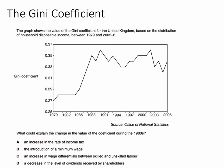So we're asked what could explain the change in the value of the coefficient during the 1980s. Well, reading off the chart, the value of the Gini coefficient went up from 0.28 in 1982, rising to 0.35 or 0.36 by the end of the 1990s — quite a significant increase in income inequality.